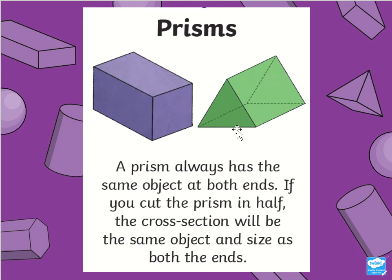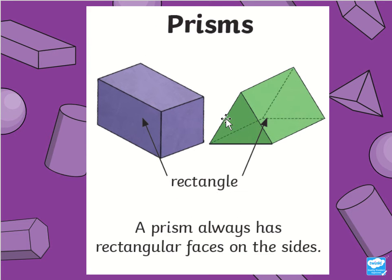Same with the triangular prism as well. There is a triangle at the front and a triangle at the back, and if you cut this down in half then you will still see the triangle shape — that's what makes it a prism. Also, a prism always has rectangular faces on the sides.